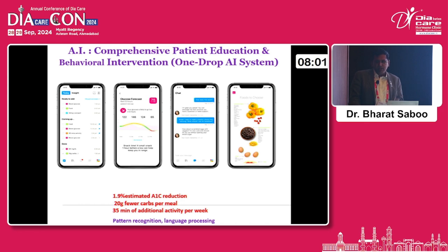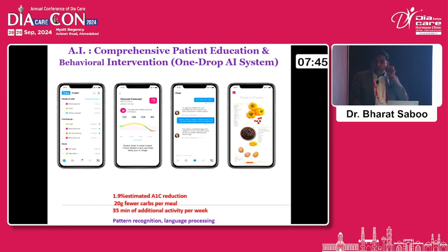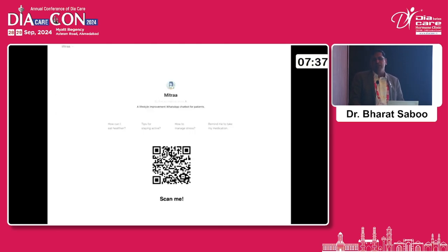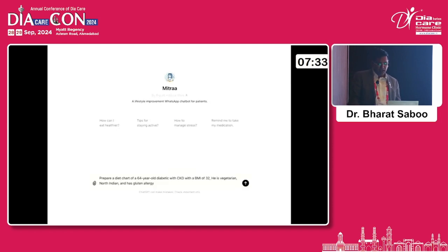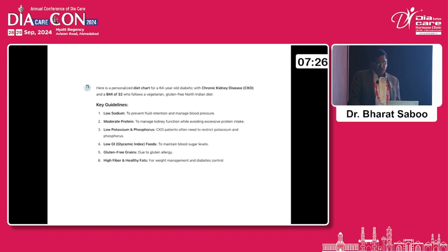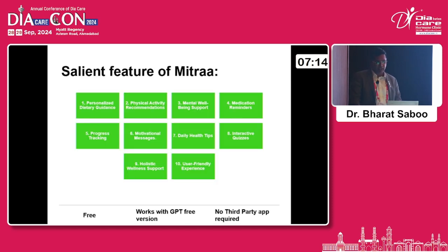One area where AI in diet, nutrition, and training comes into play is comprehensive patient education and behavioral intervention. The One-Drop AI system achieves a 1.9% estimated HbA1c reduction, 20 grams fewer carbohydrates per day automatically, and 35 minutes of additional physical activity, just by feeding data into the app. I have also developed Mitra — a ChatGPT-based model which prepares a personalized diet chart and exercise plan. For a patient with CKD it first gives key guidelines and then prepares the full diet chart, and it works even with the free ChatGPT version.